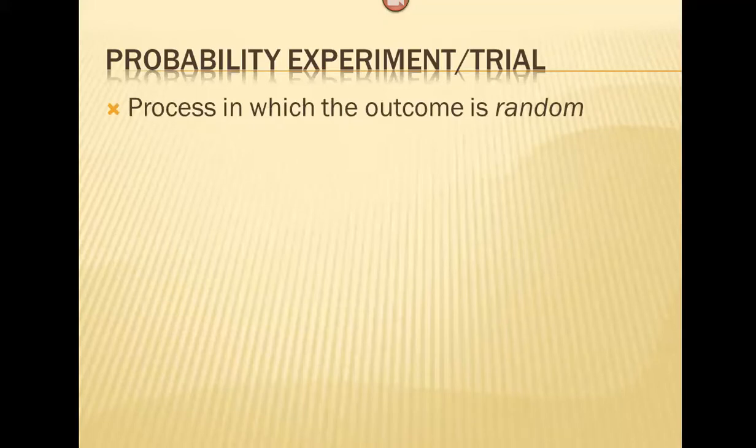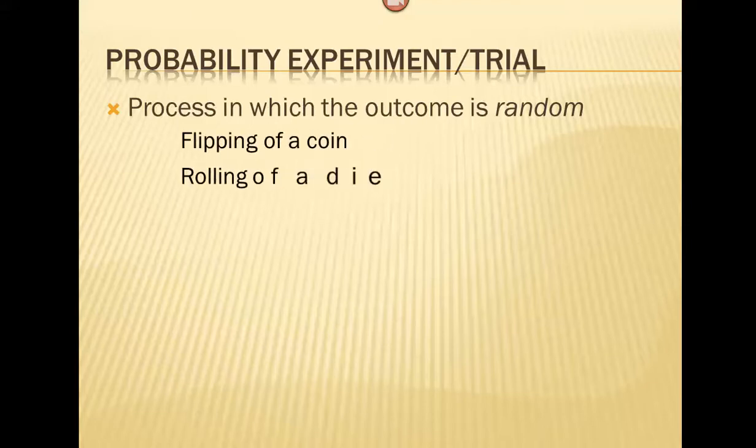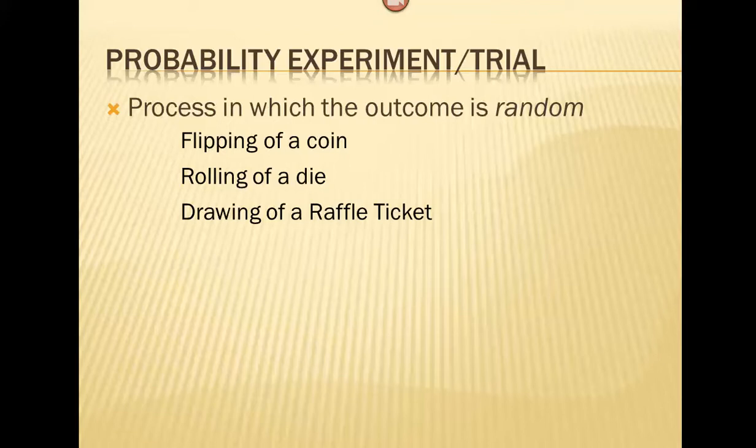Let's first talk about a probability experiment or trial. A probability experiment or trial are those types of things you've probably seen in your own life where a decision needs to be made, and you decide to flip a coin or roll a die, because we understand that process to be random. An experiment or trial is a process in which the outcome is randomly decided — whether it's flipping a coin, rolling a die, or drawing a raffle ticket out of a hat. All of these have outcomes we cannot predict, and so we call them probability experiments or trials.